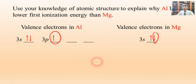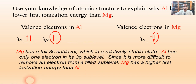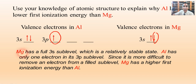Generally speaking, a filled sublevel is a fairly stable state. So magnesium's full 3s sublevel means it's harder to remove an electron — hence the higher first ionization energy. For aluminum, that one electron hanging out in 3p requires less energy to remove.